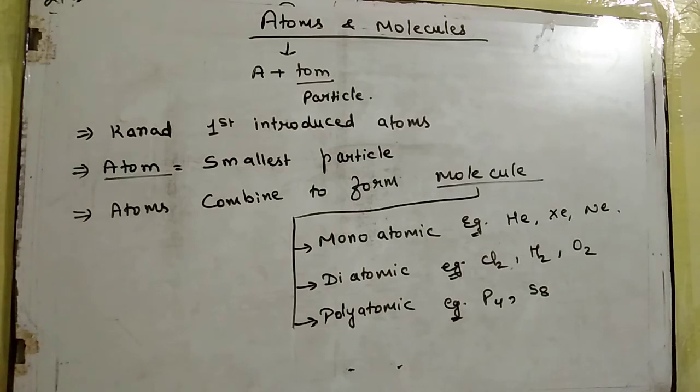Next comes diatomic molecules. Di means hota hai two, to aise molecules jo do atoms ke jodne se bante hain, they are known as diatomic molecules. For example, chlorine, hydrogen, oxygen, they all are diatomic.